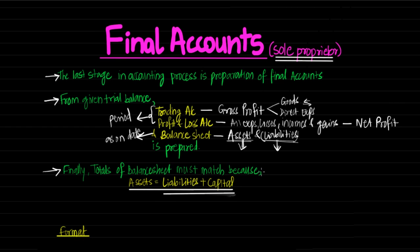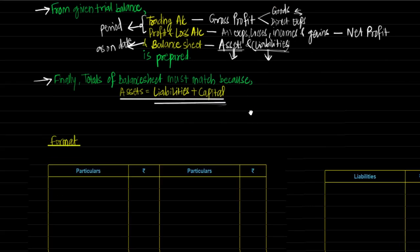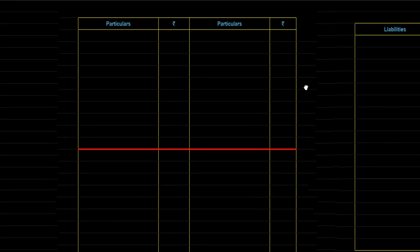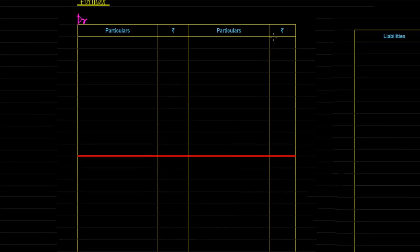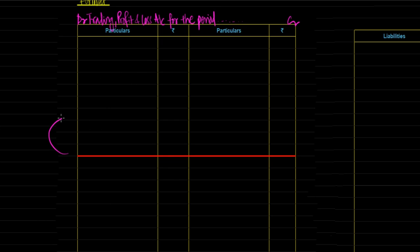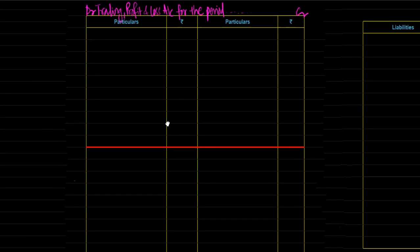Let's first learn the format in which Final Accounts is to be prepared. This is how it looks: there is a debit side and a credit side — Trading Profit and Loss Account for the period. This red line separates the Trading Account and Profit and Loss Account. Above this red line is Trading Account and below this red line is Profit and Loss Account.